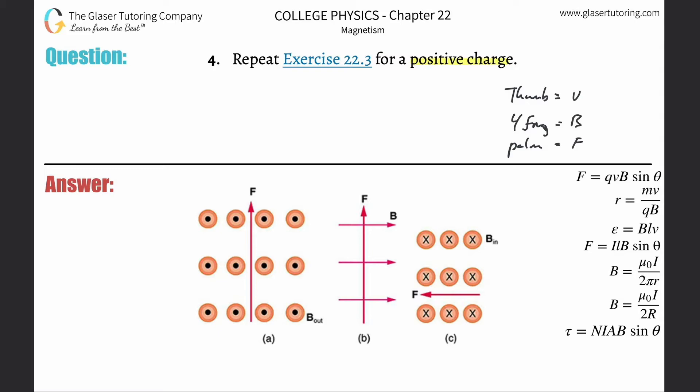The thumb should be pointing to the left. That's the direction of the velocity - the thumb represents velocity.